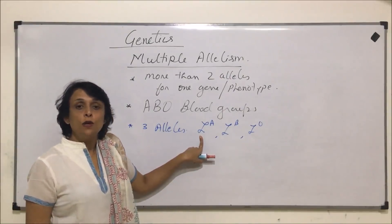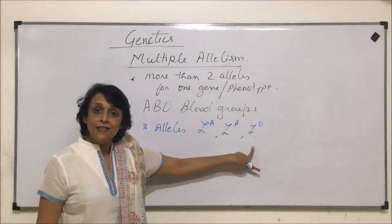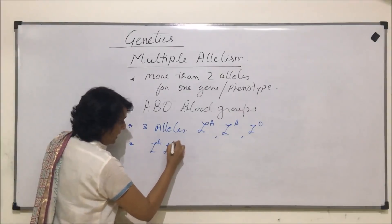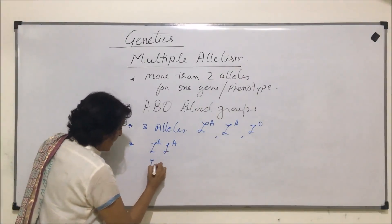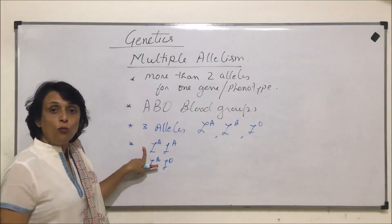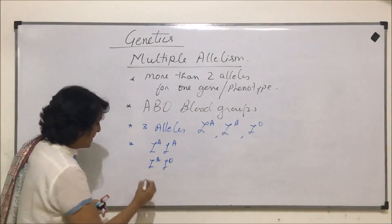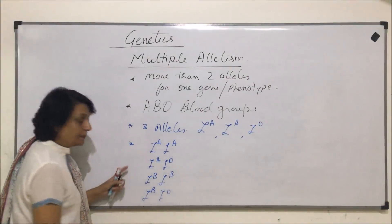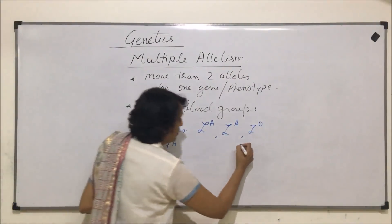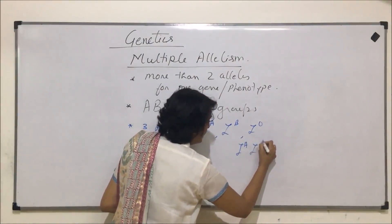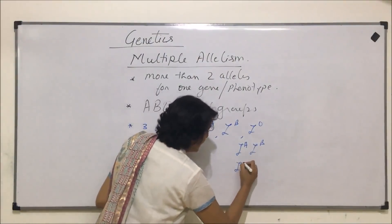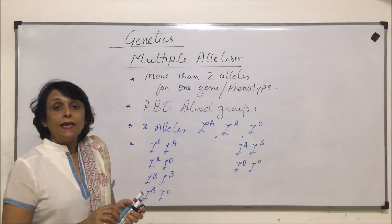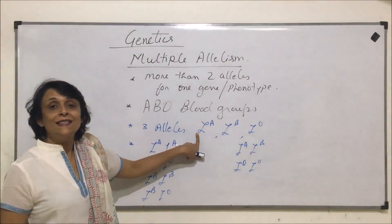Every individual will have only two out of these three alleles. So, an individual can have IA IA — that is homozygous — or IA IO, which is heterozygous. The other possibilities are IB IB, IB IO, IA IB, and the last is IO IO. So these are the various combinations which we can have in individuals.